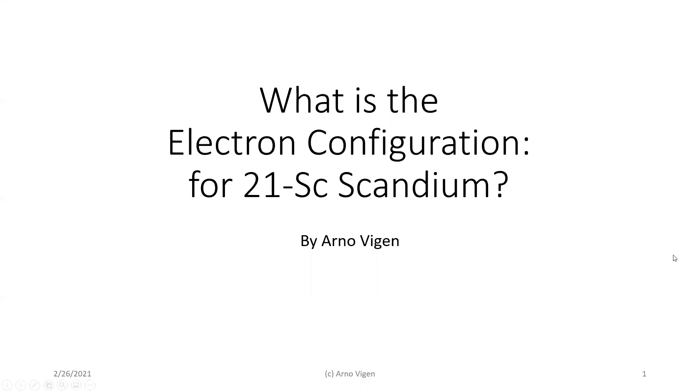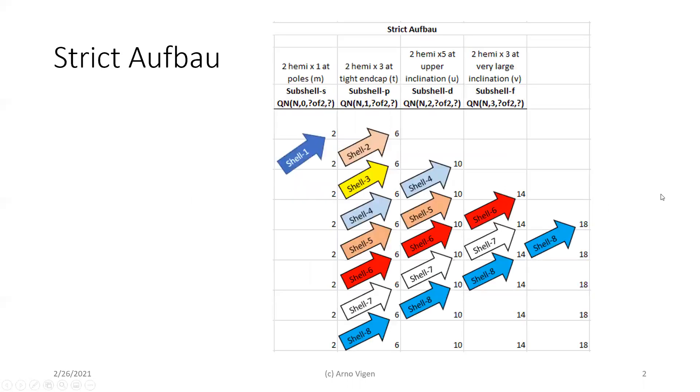What is the electron configuration for scandium, 21 protons, symbol Sc? Now the normal way to understand electrons, historically for the last centuries, is strict Aufbau.